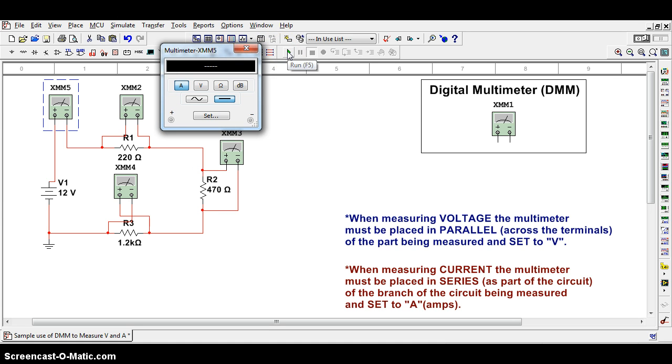So I'm going to go ahead and hit run and see what happens with the measurement of current. 6.349 milliamps. You'll find that this confirms the calculations we did previously.